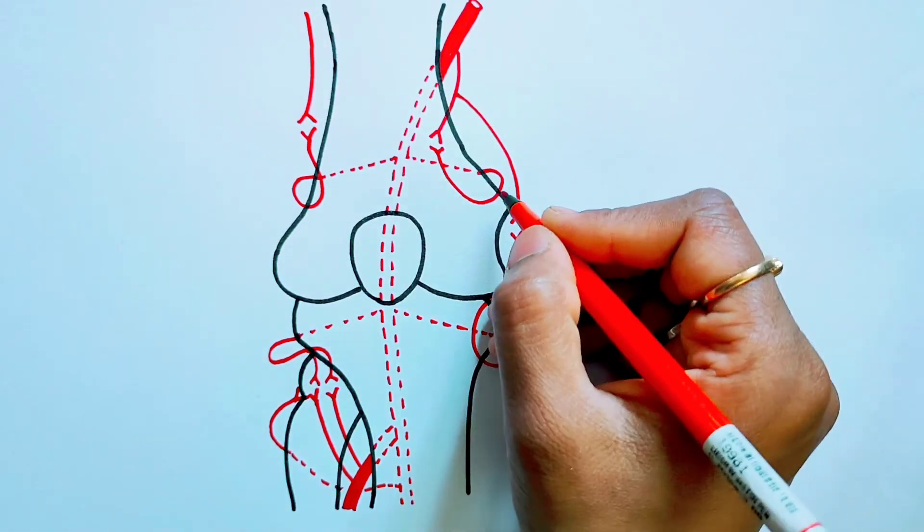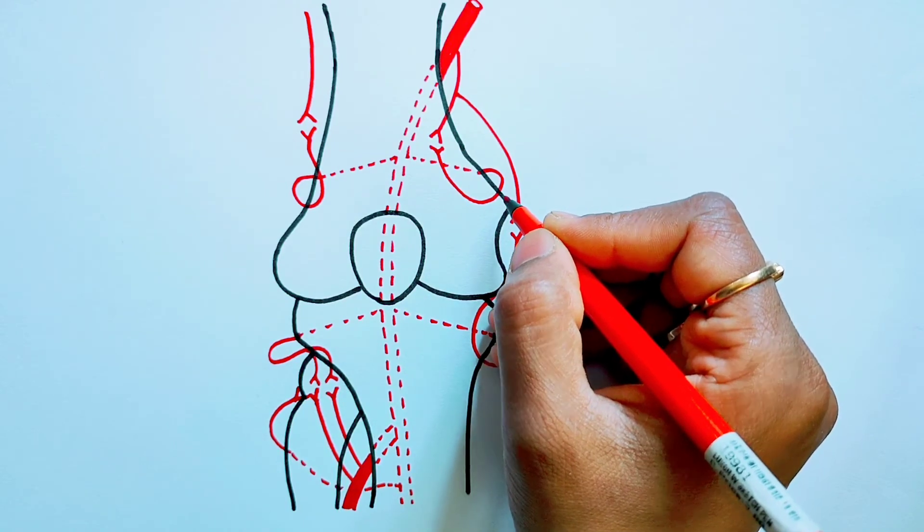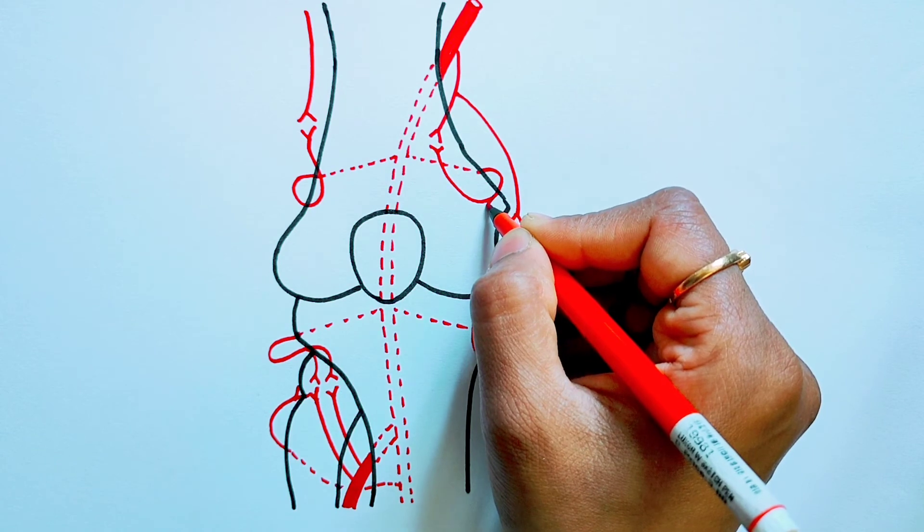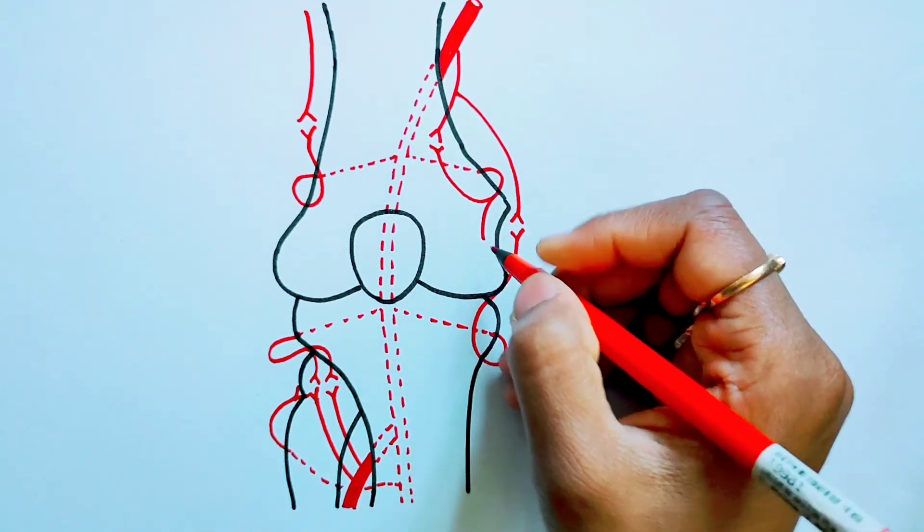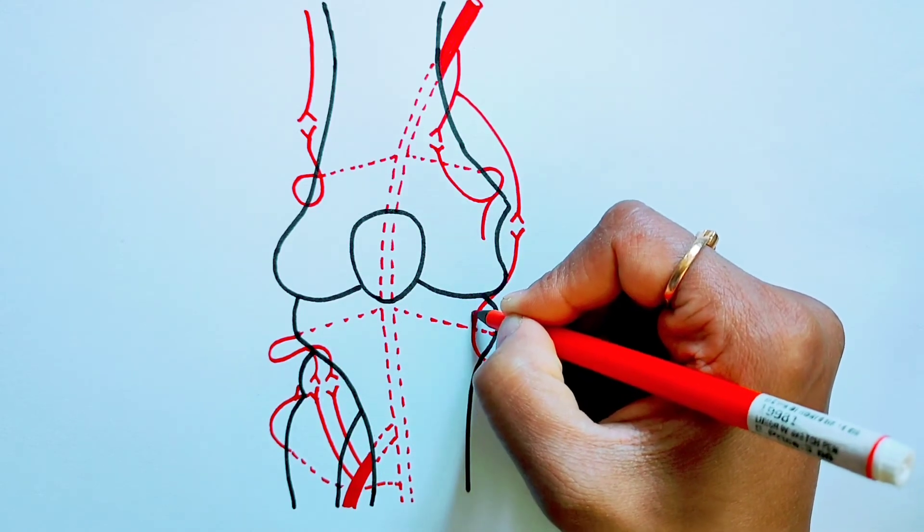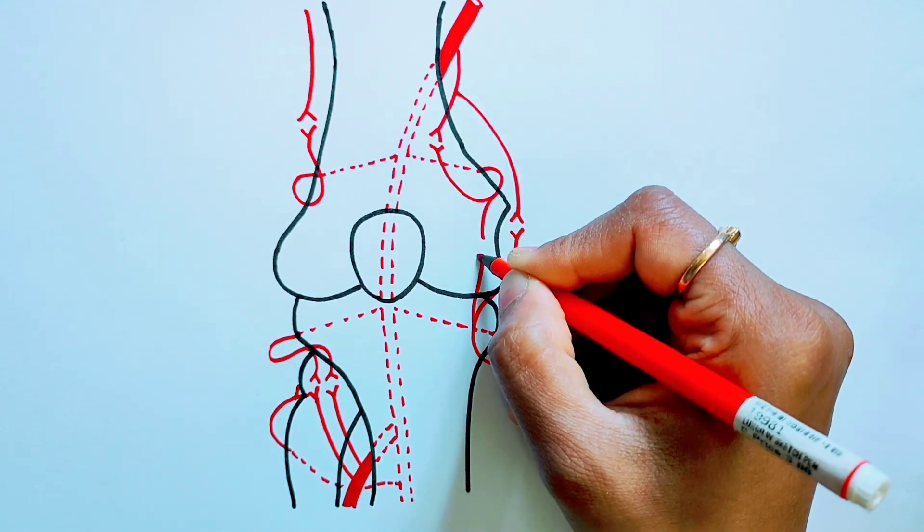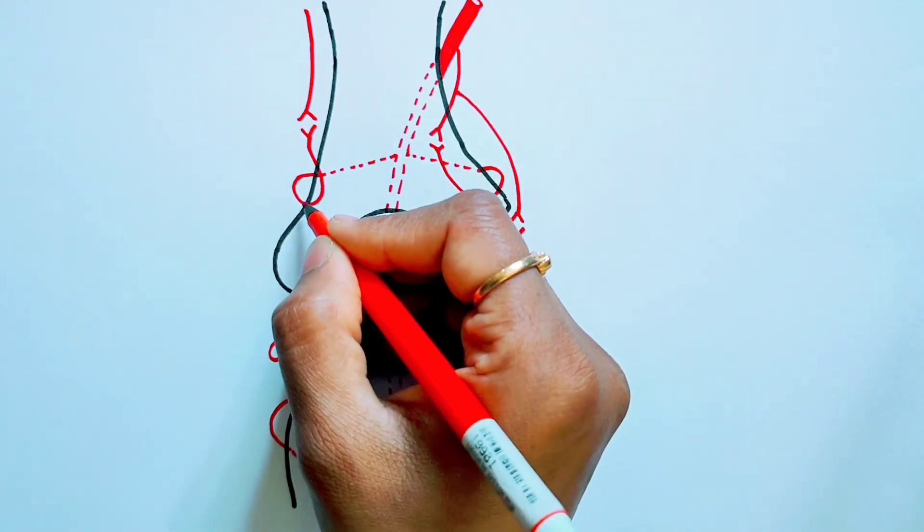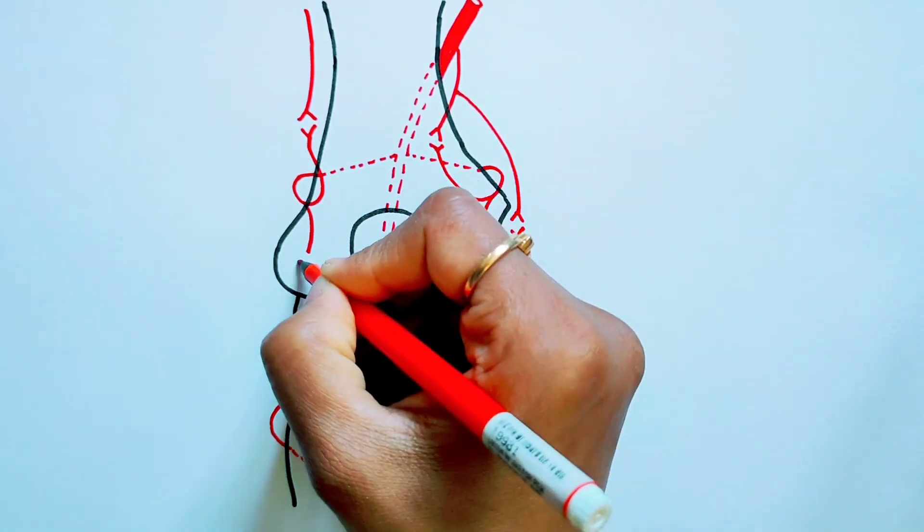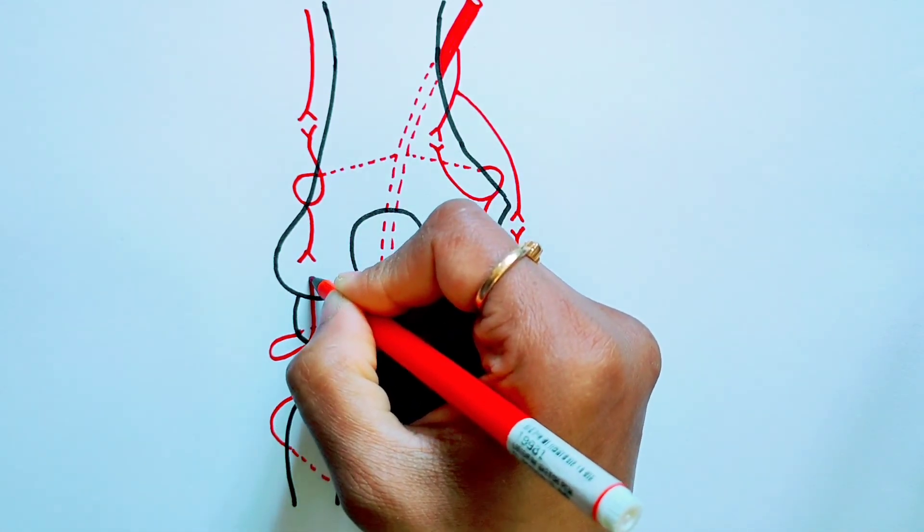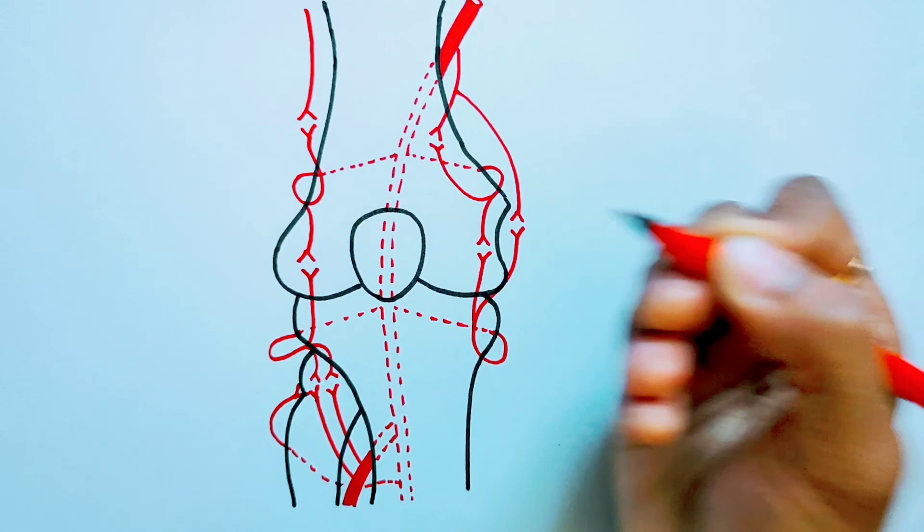So what you can do is you can just take this down and this one you can just bring up and just draw like this. Again, take this down and this one take up and just draw like this. This completes your diagram.